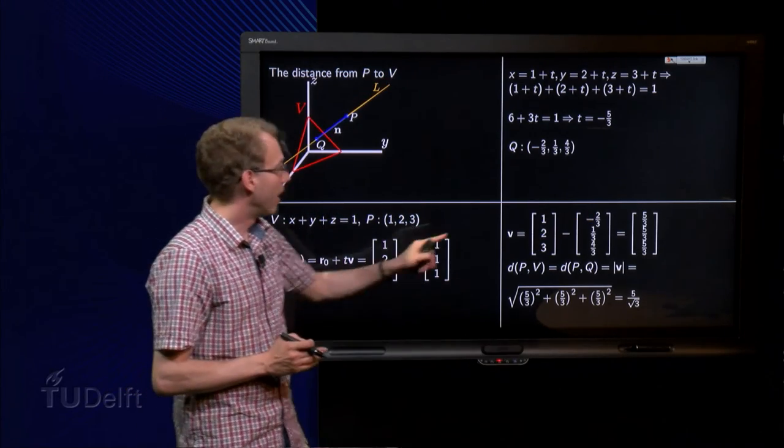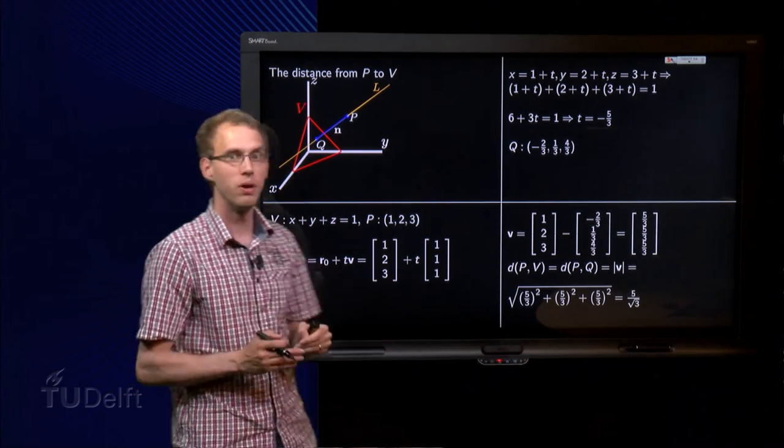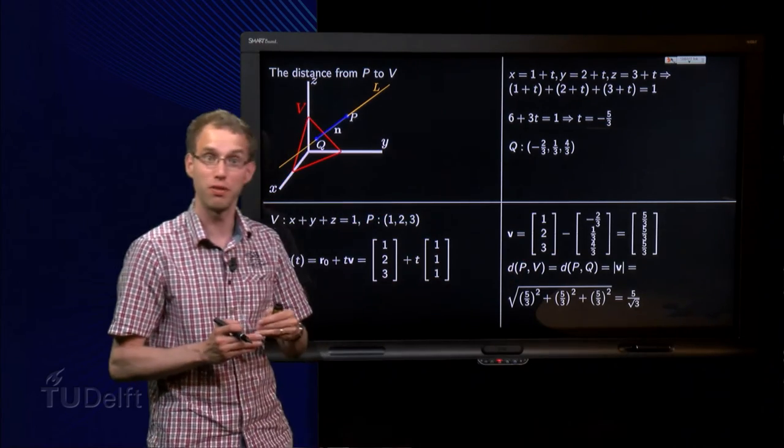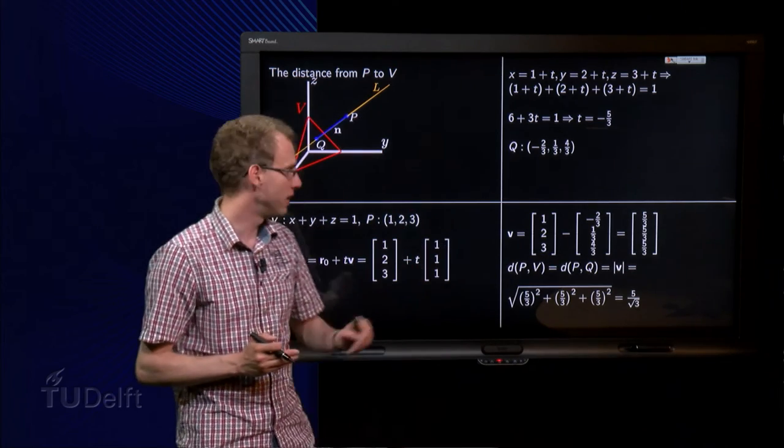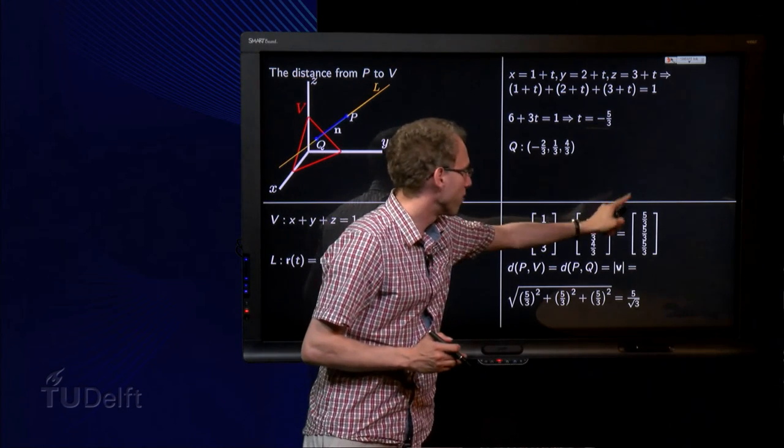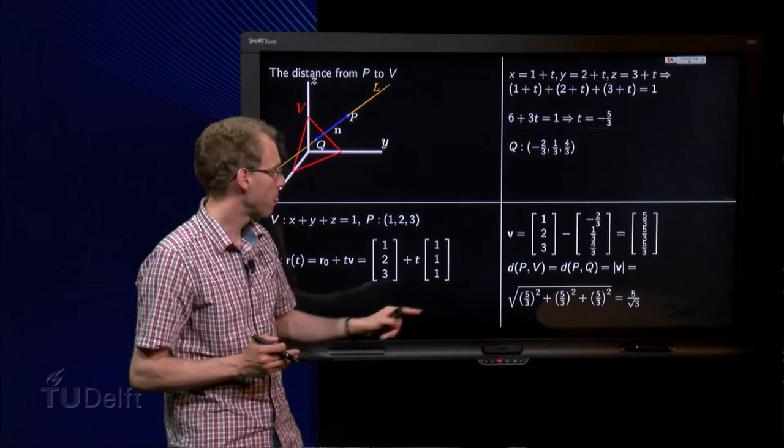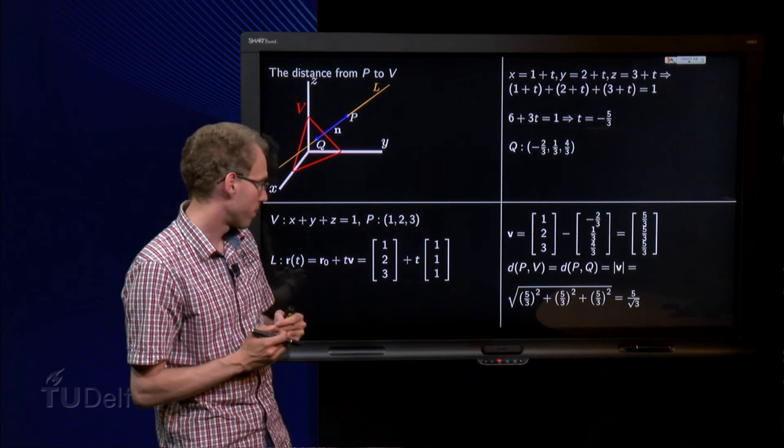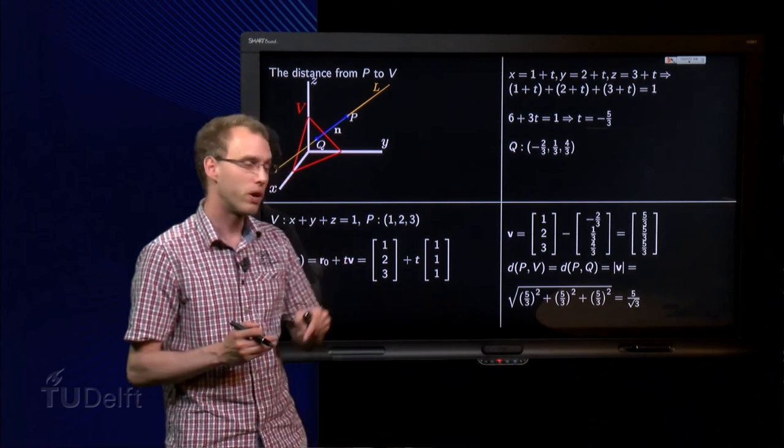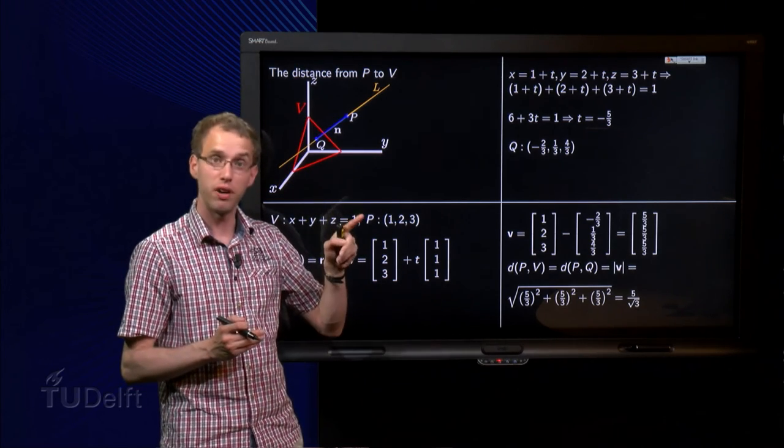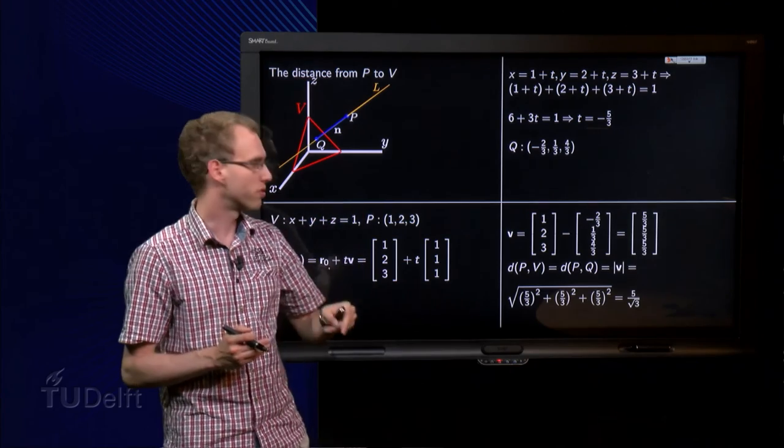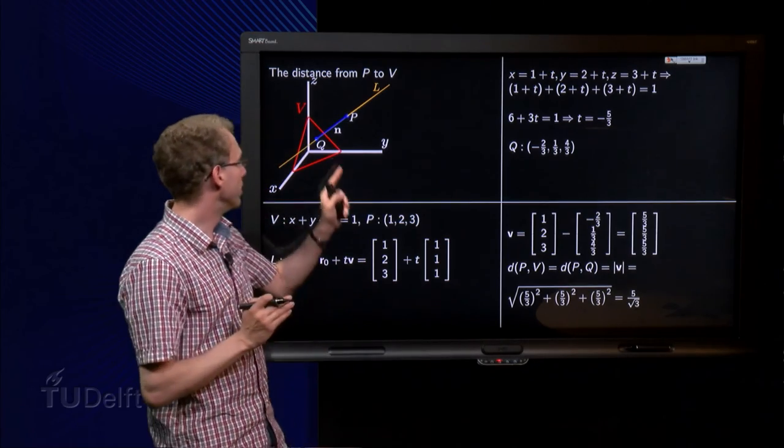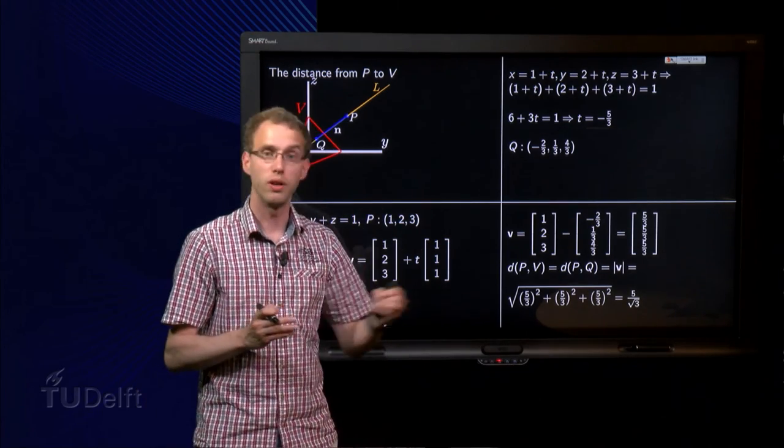Finally, there we are, the length of V, the vector from P to Q gives you exactly the distance from P to Q, which is the same as the distance from P to V. So we compute the length of V, which is the square root of 5 over 3 squared plus 5 over 3 squared plus 5 over 3 squared, which equals the square root of 75 over 9. So if you work it out, you get 5 times square root of 3 over 3, or 5 over square root of 3. And that is the distance from the point P to the plane V.